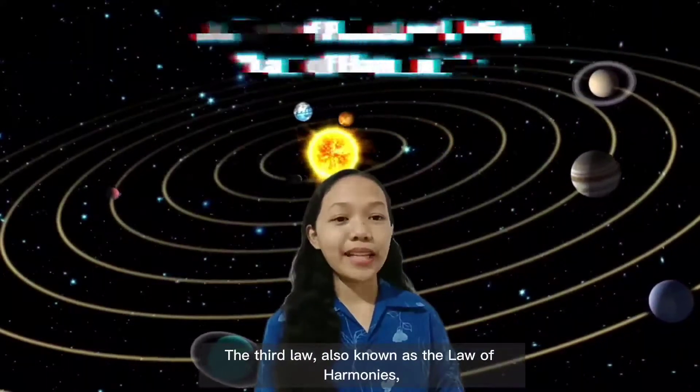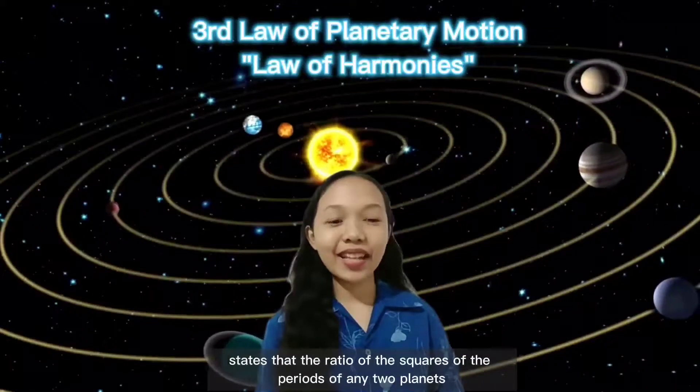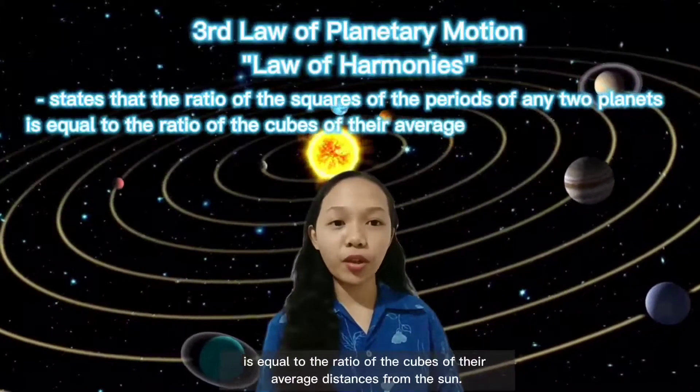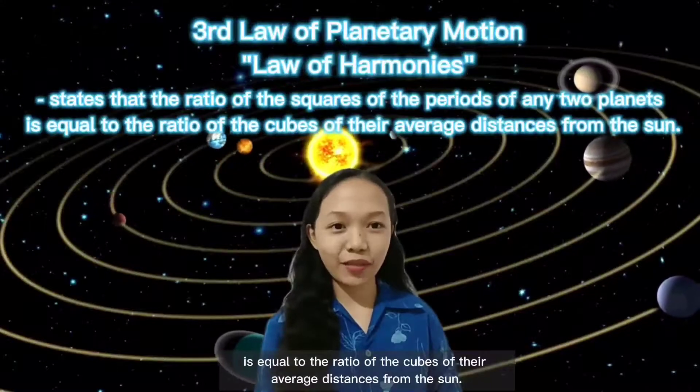The Third Law, also known as the Law of Harmonies, states that the ratio of the squares of the periods of any two planets is equal to the ratio of the cubes of their average distances from the Sun.